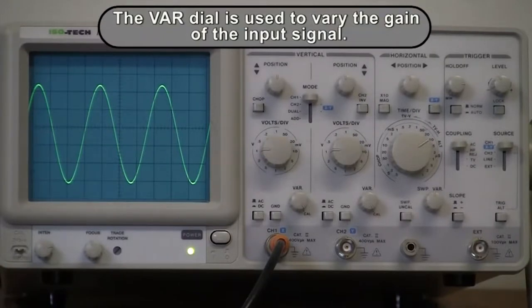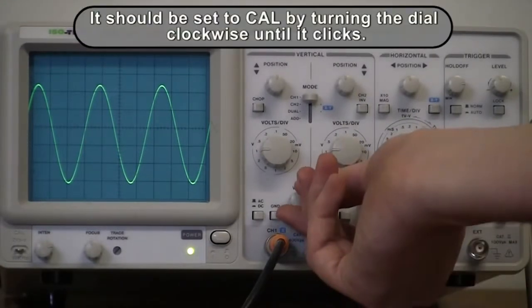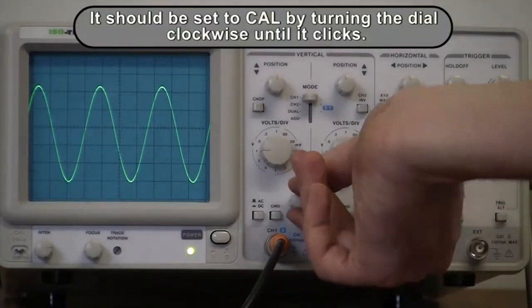The VAR dial is used to vary the gain of the input signal. It should be set to calibrated mode by turning the dial clockwise until the click is heard.